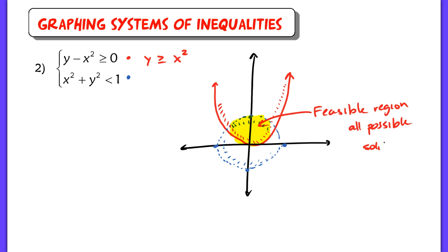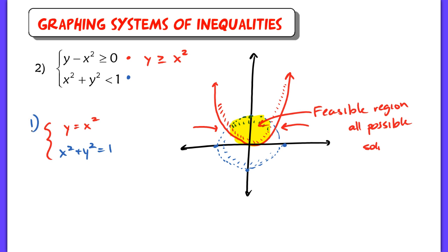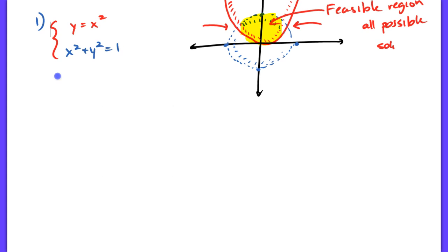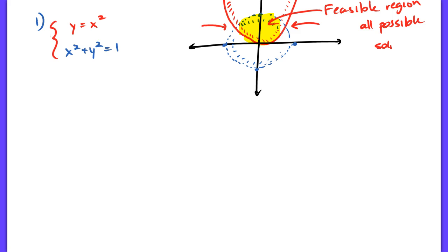You're also going to be asked to find the points of intersection. We do have two unique points of intersection between these two inequalities. To find them, we're going back to a previous skill from section 11.6 — solving nonlinear systems. So we're solving the system y equals x squared, and x squared plus y squared equals 1. Some of you might substitute x squared in for y and make it x squared plus x to the 4th equals 1, which you're welcome to do.